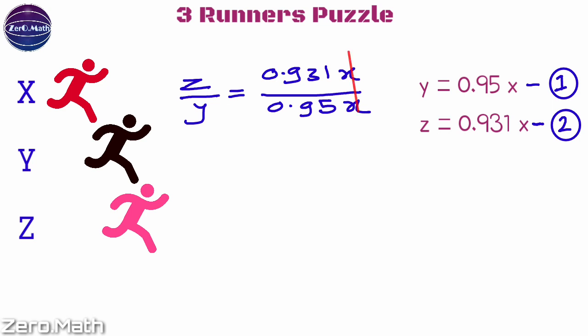We will get z/y = 0.98. We can further simplify this equation as z/y = 980/1000.